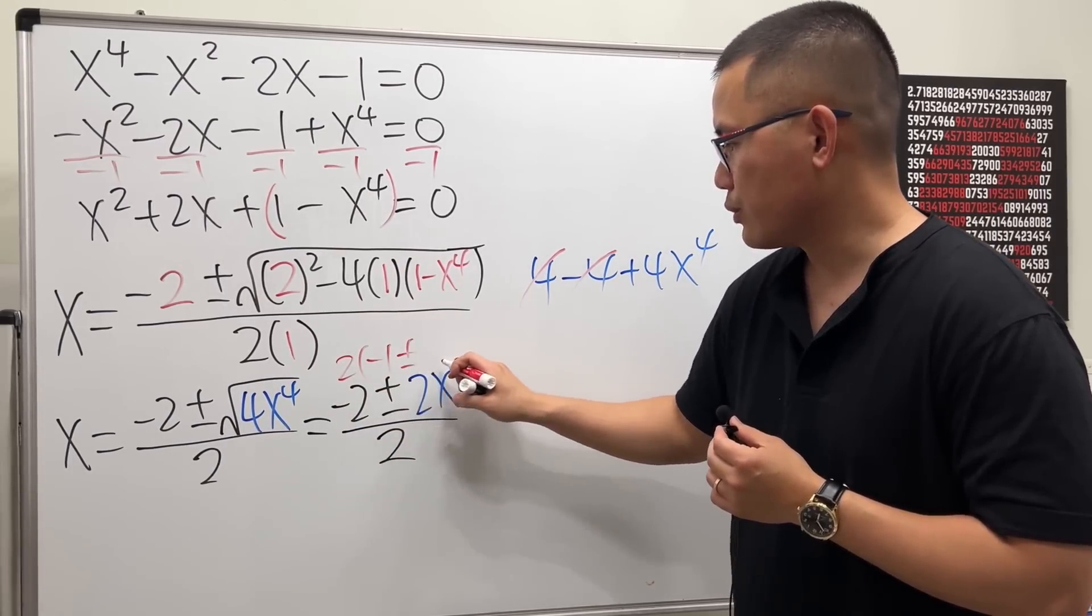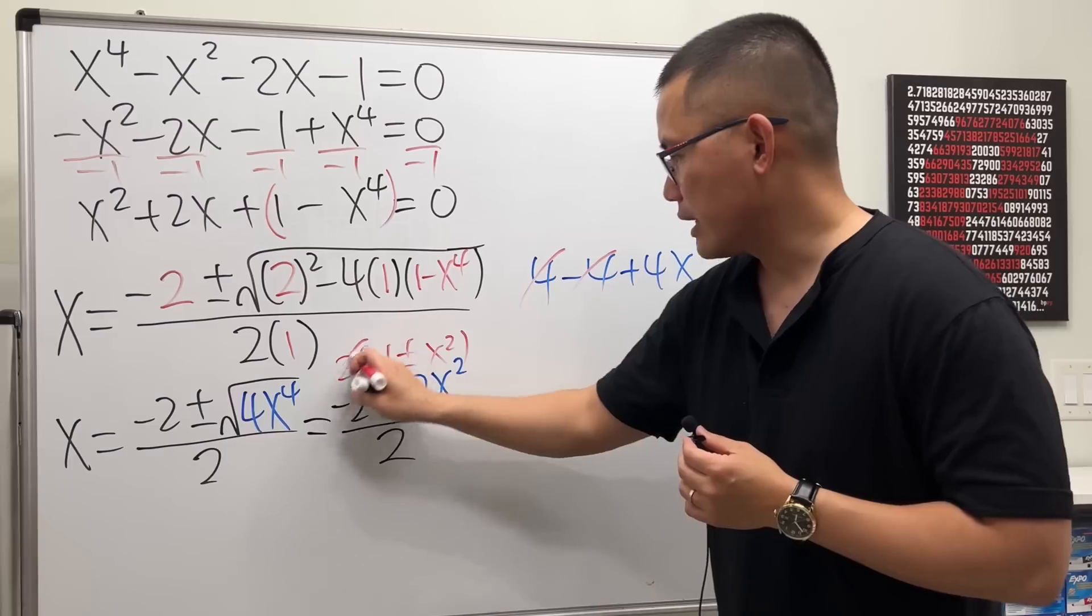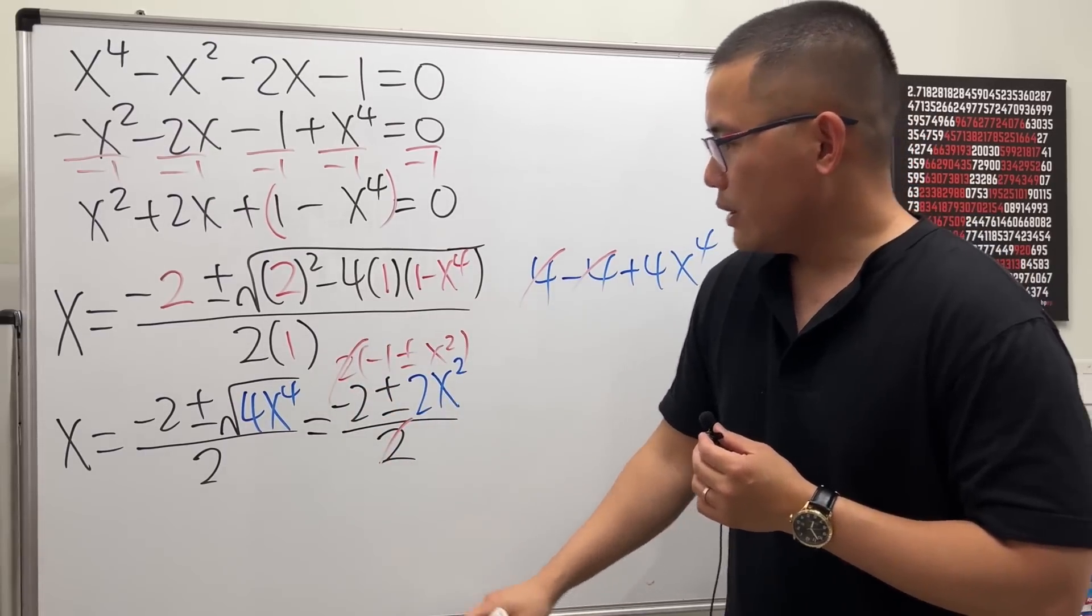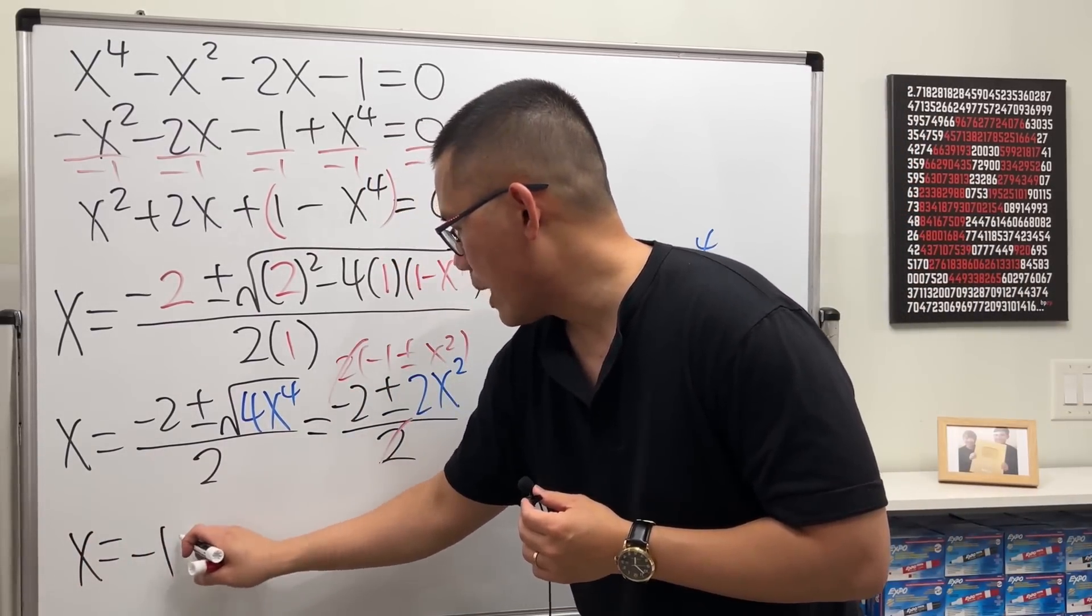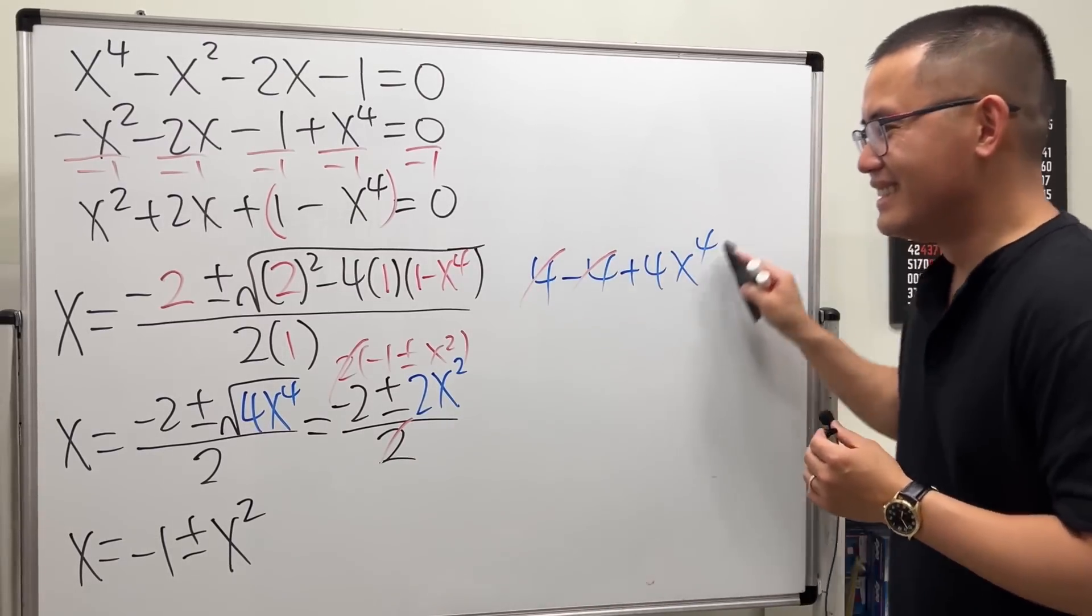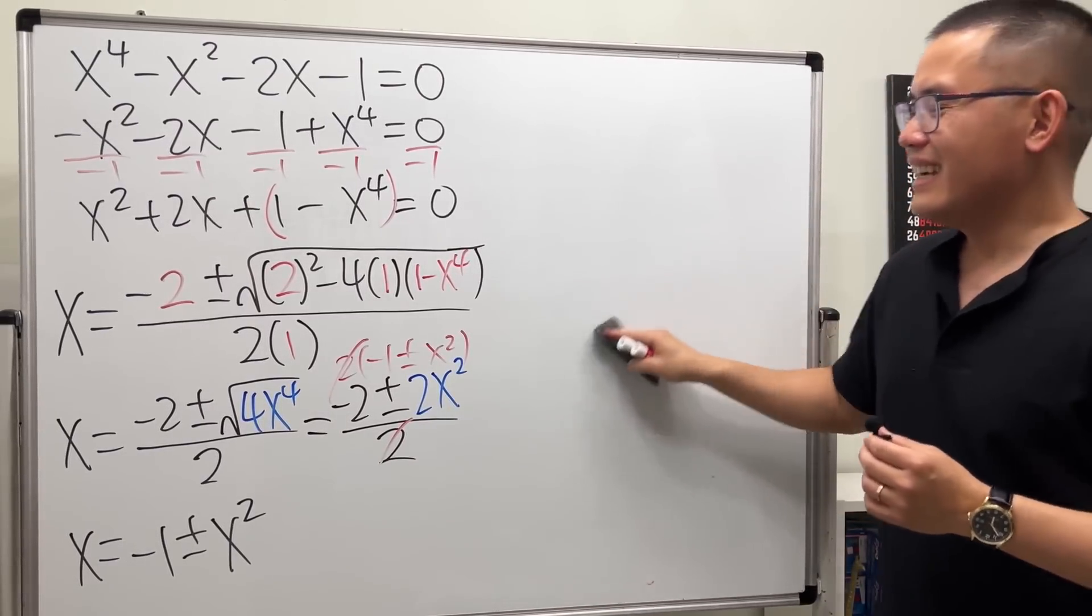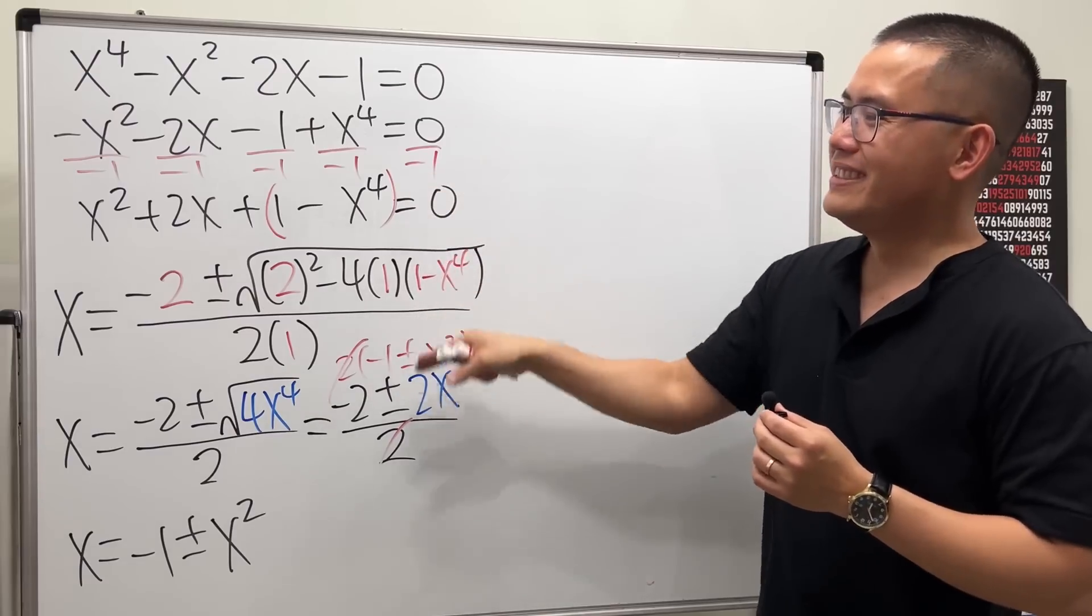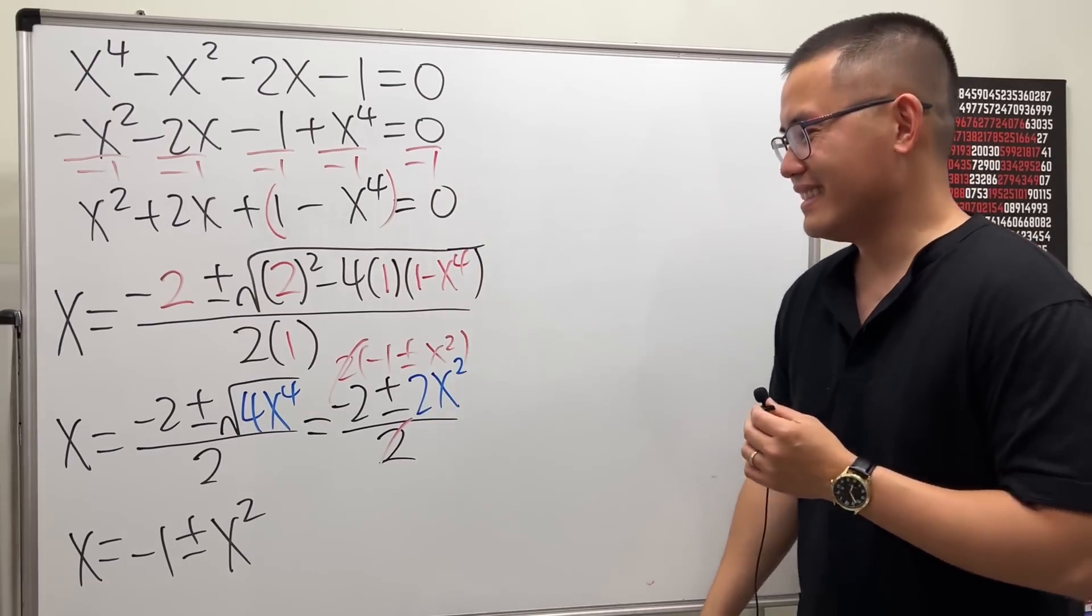And then divided by 2, and then we can factor out 2 and then cancel things out. So cancel this, so we are looking at x equals minus 1 plus or minus x to the second power. Look at that! Finally, yes I came up with something that if you use this it simplifies it very nicely.